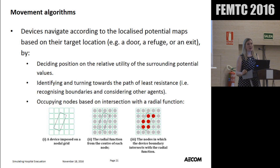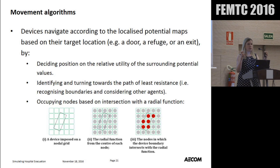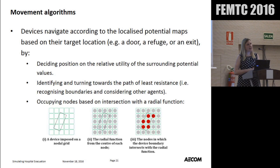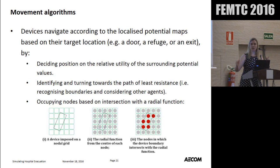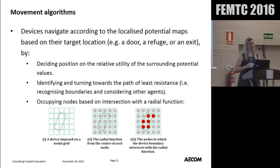Secondly, we used movement algorithms based on the potential maps of the nodal system. Many of you will know that in building Exodus and other models, there's a potential map where occupants look at every step around them and choose the step with the best relative utility — the one closest to an exit or next location. In this way, devices acted like large rectangular agents: thinking about their next step and turning toward the path of least resistance using the potential map. This allowed devices to navigate on the same nodal grid as agents, and be present in the space.